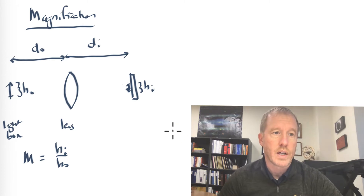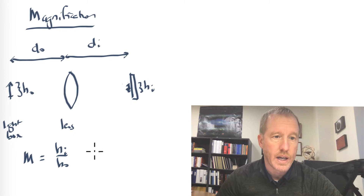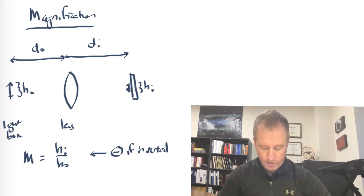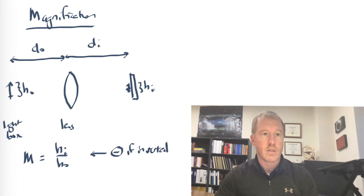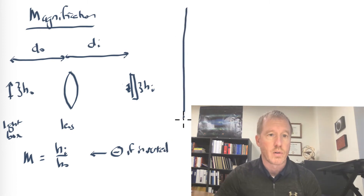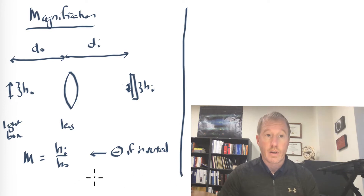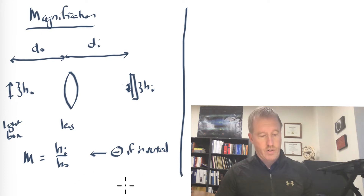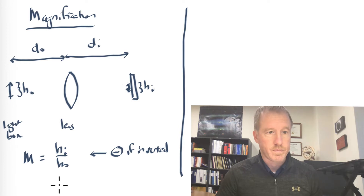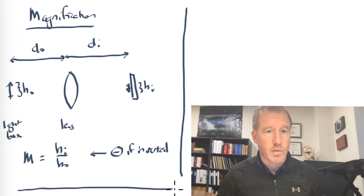And if it's inverted, it will be negative — that's just the convention we use for meaning an inverted image. So in this section on magnification, you're going to be going through all of your data and calculating the magnification for each of your data points. That's pretty straightforward; you don't really need to collect any more data for that.